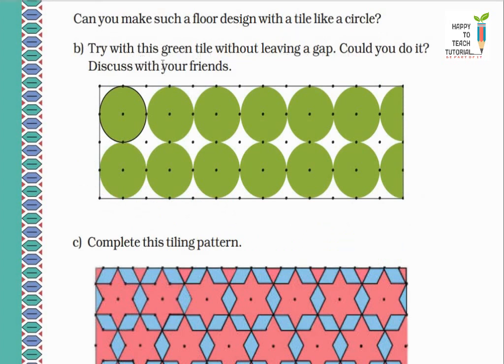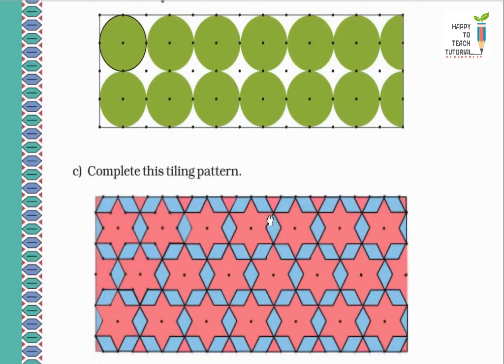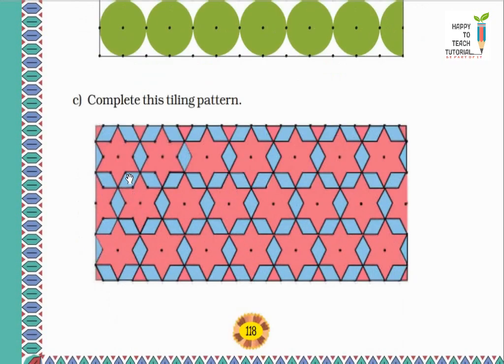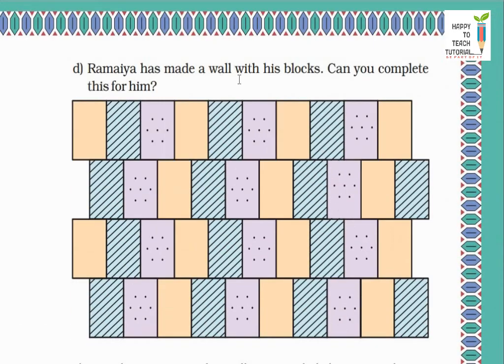Now you cover this floor with these tiles. Could you do it? Discuss with your friends. Ramayya has made a wall with his blocks. Can you complete this for him? Look, Ramayya was making a wall using blocks. So he arranged the blocks in this way: first these yellow blocks, then blue blocks in this way, then violet color blocks. So we have to complete the block patterns. So we have to do it. We will place the blocks: yellow, then blue, then violet. Yellow, blue, violet. In this way we will arrange all the blocks.